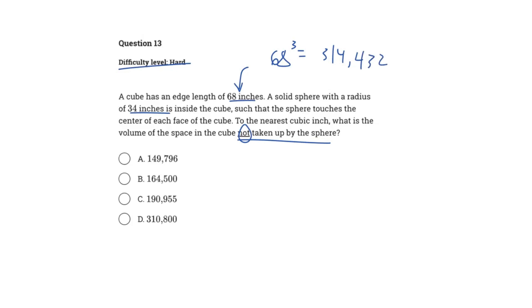But we have this solid sphere inside with a radius of 34 inches. How do we find the volume of a sphere? We have 4 thirds times pi times r cubed. So since we have 34 inches as our radius value, we can plug in 34, cube that, and we get 164,636.